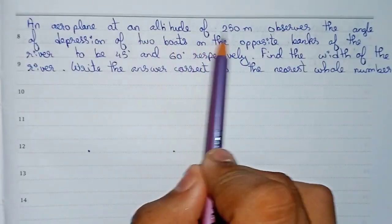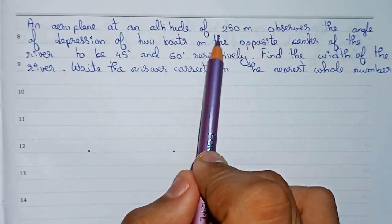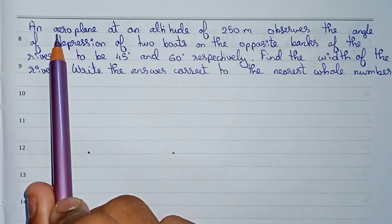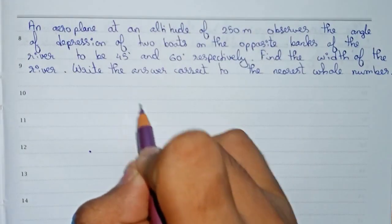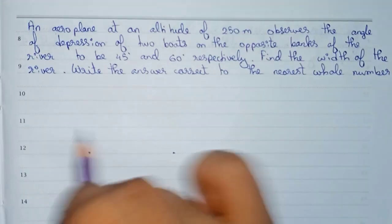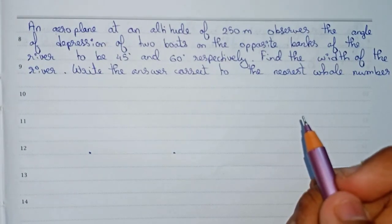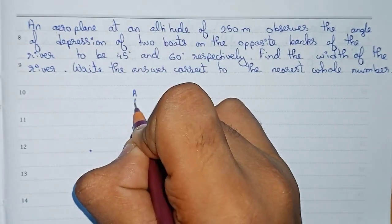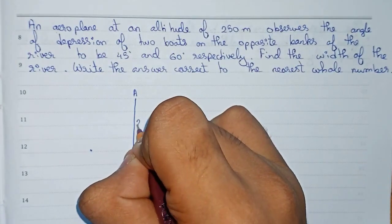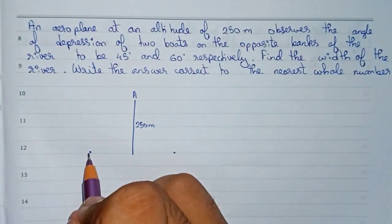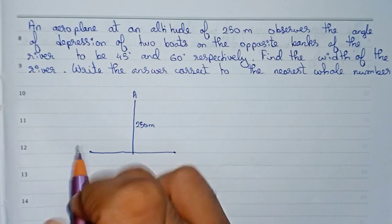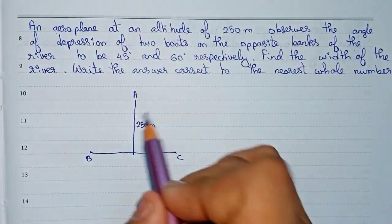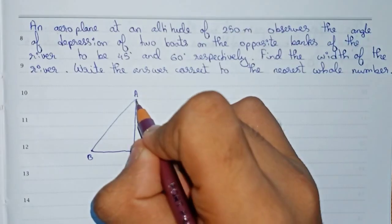Now it is given that an aeroplane at an altitude observes. From 250 meters the aeroplane is observed. But the position of the aeroplane is not mentioned — it is not given whether the aeroplane is between the two boats or on one side. So first we will take that the aeroplane is at point A, with the altitude of 250 meters. Our two boats we'll call B and C. Joining them gives us this triangle structure.